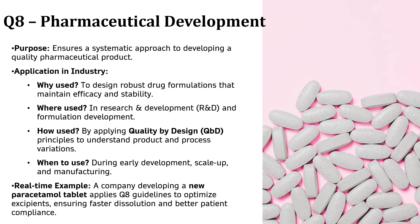Next is ICH Q8, Pharmaceutical Development Guideline, which is all about taking a systematic approach to developing a high-quality pharmaceutical product. Medicines must be effective, stable and safe for patients. By following ICH Q8, companies can design robust drug formulations that work as intended even under different conditions. For example, imagine a company developing a new paracetamol tablet. By applying ICH Q8 guidelines, they carefully choose excipients to make sure the tablet dissolves quickly in the stomach, providing faster relief and improving patient compliance. Without ICH Q8, drug development could be based on trial and error, leading to inconsistent products. With this guideline, companies can create high-quality medicines right from the start.